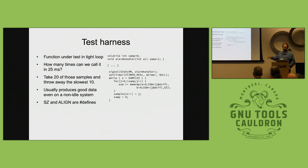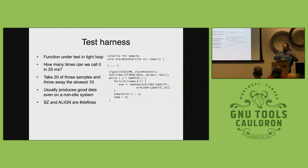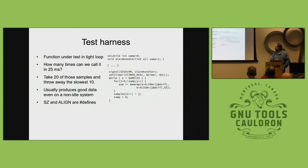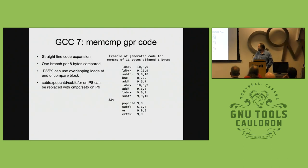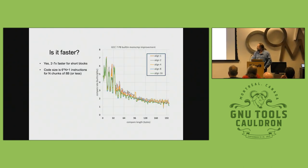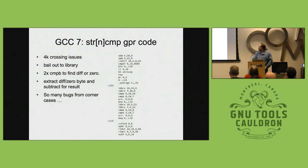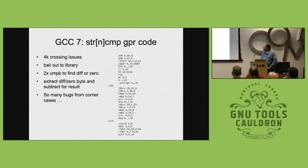That's just to telegraph the alignment, so it ends up in expand. When I look at the alignment of the arguments to the built-in memcopy or memcompare, that will come through there. Then this is the same thing in GCC 7 but for string compare and strncmp.